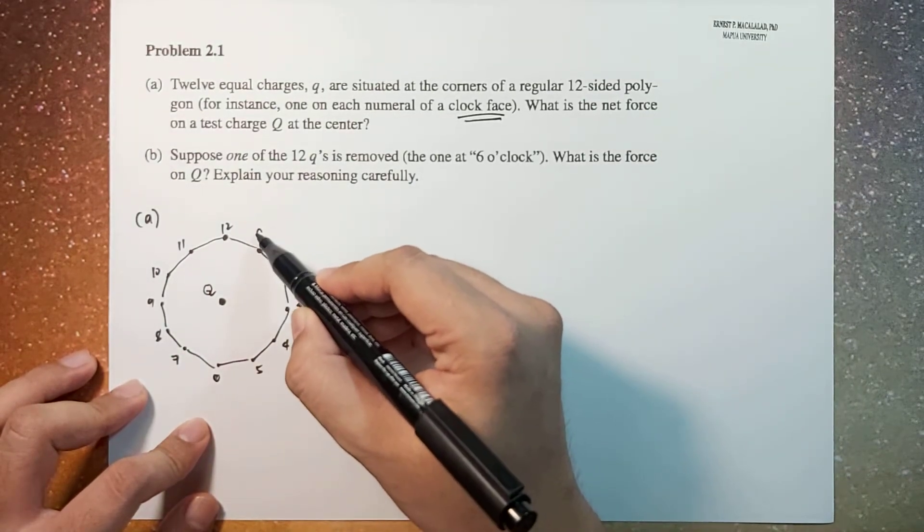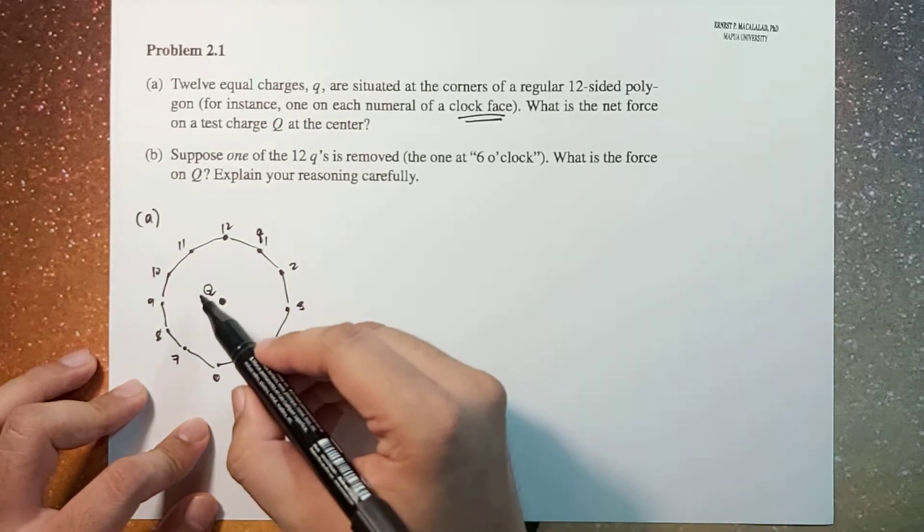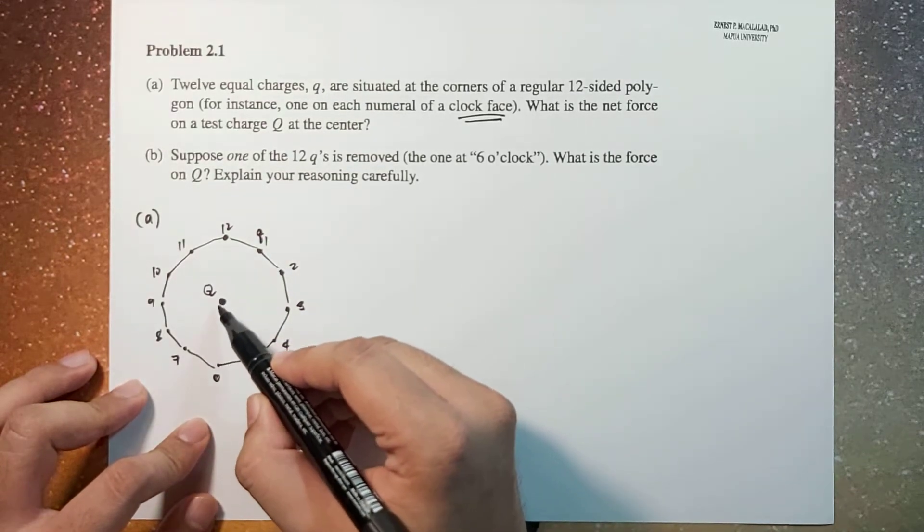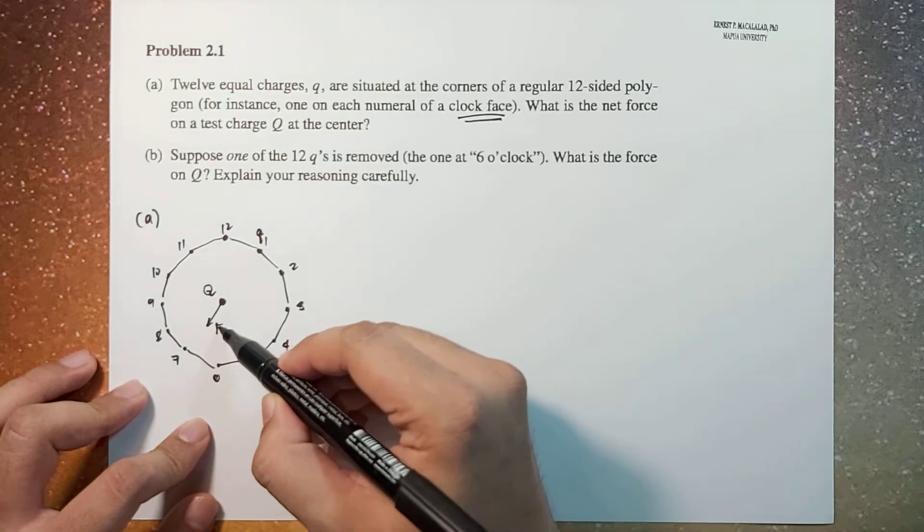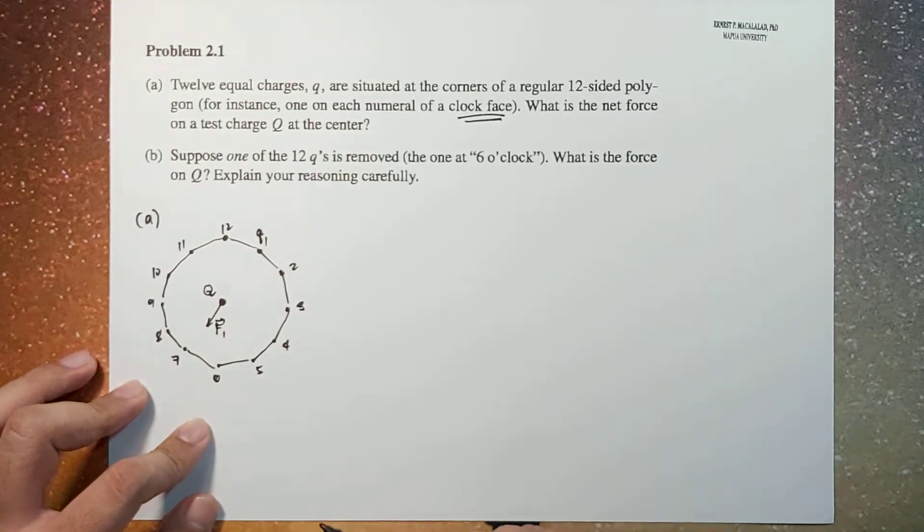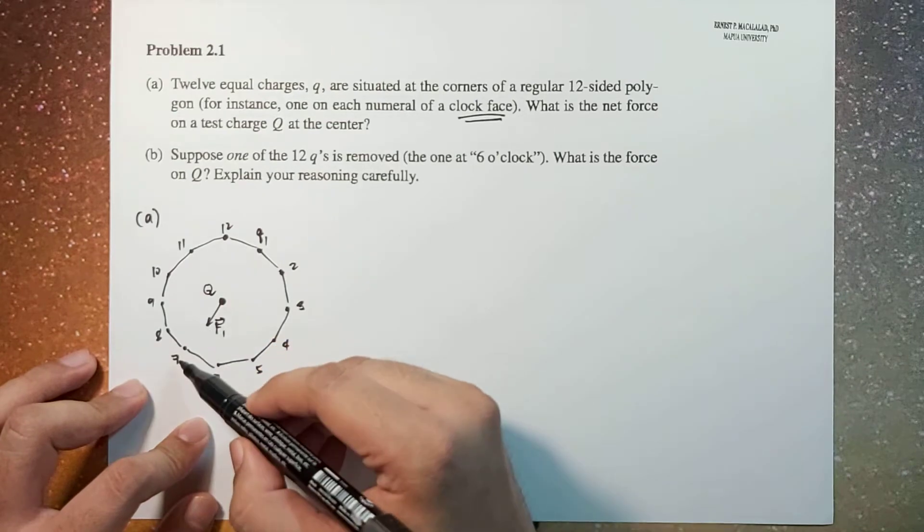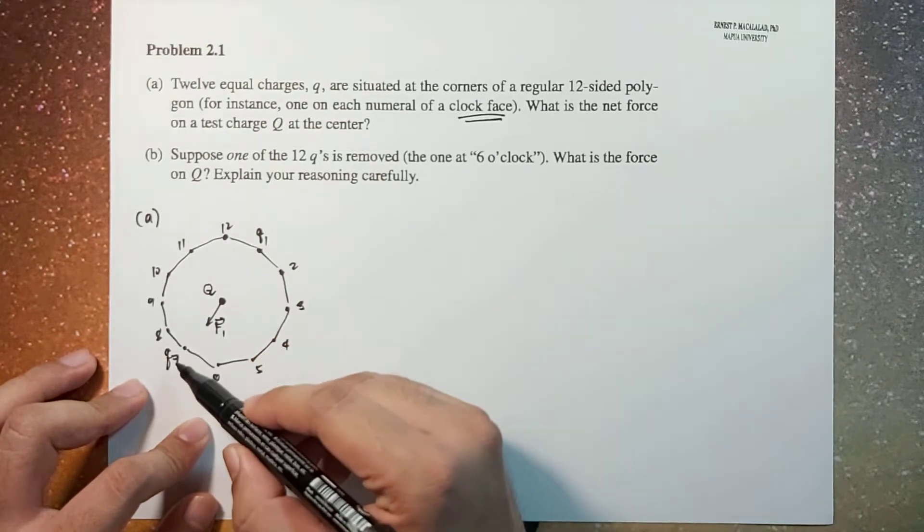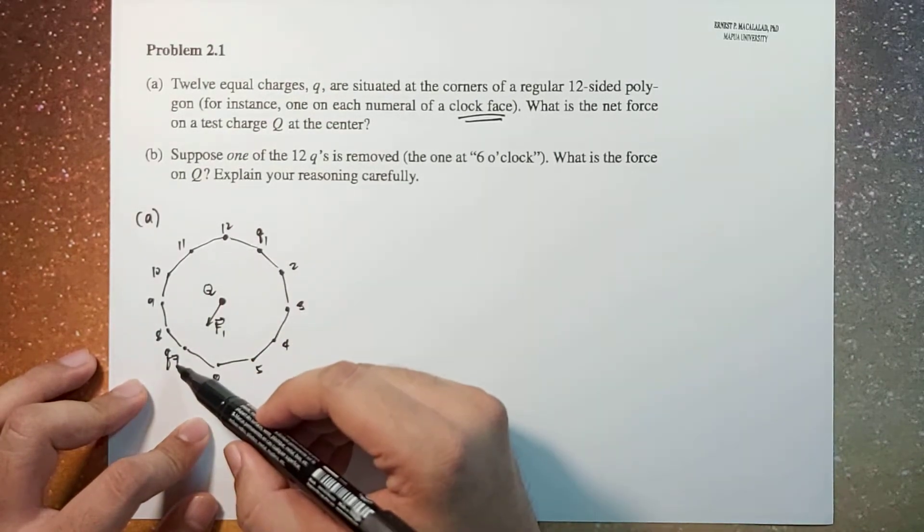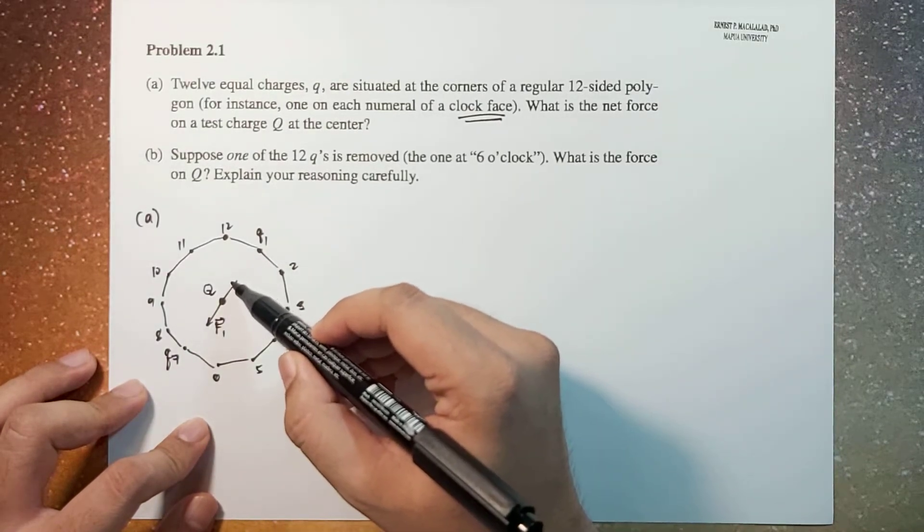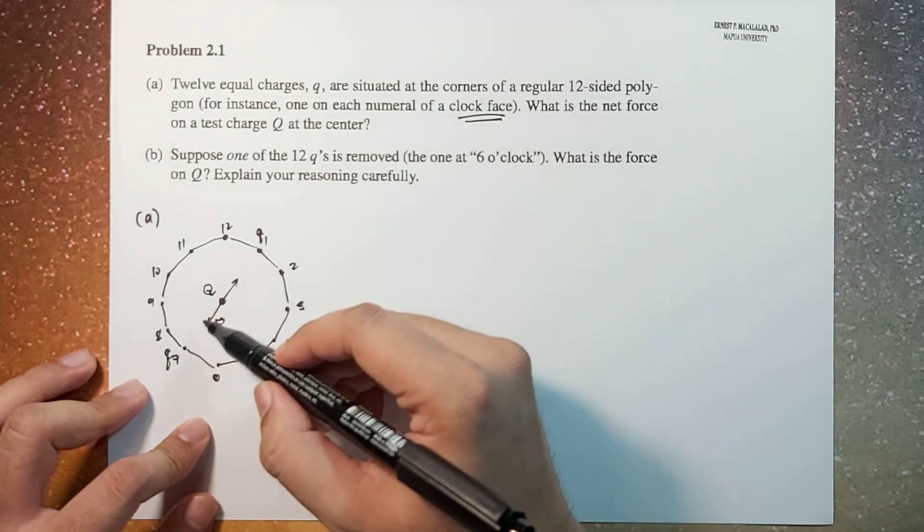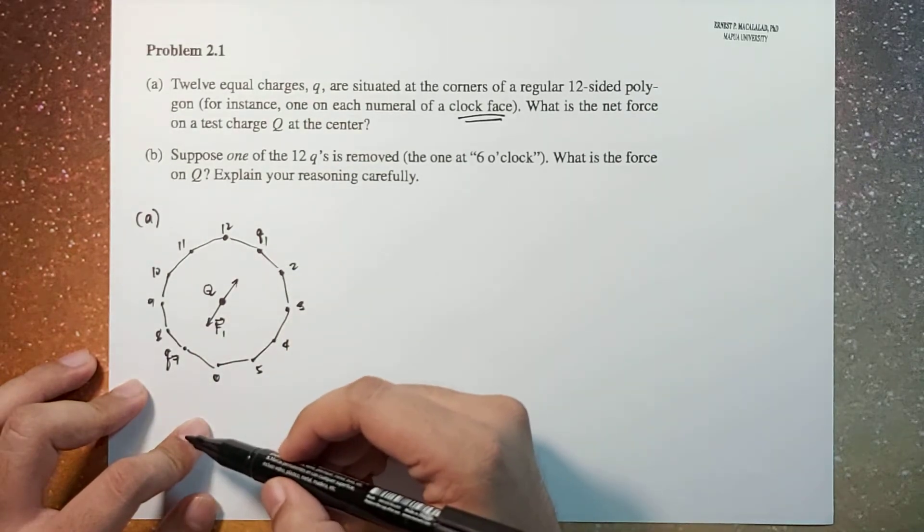So you will notice that this charge, let's call this q1, will exert a force on Q - let's say a repulsive force, so let's call this F1. Now because q7 is on the other side of this polygon, this will also exert a force with the same magnitude, because the pairs have the same distances.